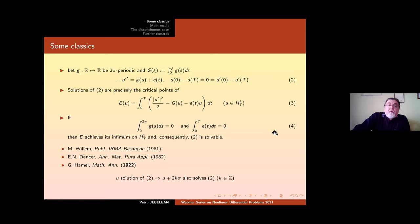If these two conditions in 4 hold true, meaning this integral vanishes and this mean vanishes, then E achieves its infimum on H^1_T and consequently problem 2 is solvable. This result was independently proved by Willem and Dancer in 1981 and 1982 using the frame of the Sobolev spaces, while actually they rediscovered earlier results due to Hamel since 1922 in the frame of 2π periodic C^1 functions.